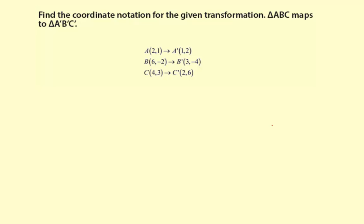Find the coordinate notation for the given transformation. It says triangle ABC maps to triangle A prime, B prime, C prime. So we need to figure out the patterns in the coordinates and then write that in coordinate notation.